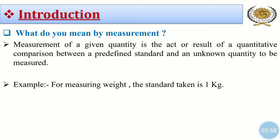Now you can take another example. If we have to measure the length of something, let us say a rope, then what will be the predefined standard? The predefined standard is centimeter, meter, or kilometer, which is already defined and accepted universally. So we compare the length of the unknown quantity with the predefined standard, that is centimeter, meter, or kilometer. And the comparative result of that unknown quantity and predefined standard is your measurement.